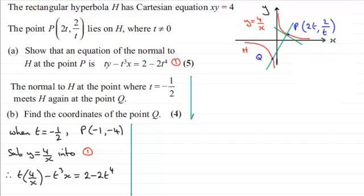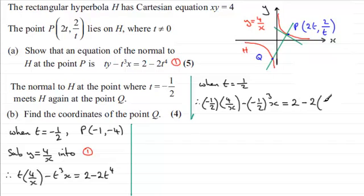And we'll just border this off a bit. So when t equals minus a half, if I substitute this into here, we therefore are going to have minus a half multiplied by 4 over x. And then we're going to have minus minus a half all cubed, minus a half all cubed, and that's multiplied with the x. And then we've got that equaling 2 minus 2 times t to the power 4, in other words, minus a half all to the power 4.